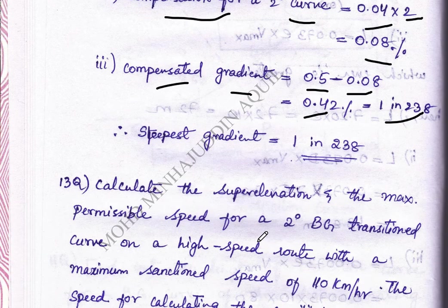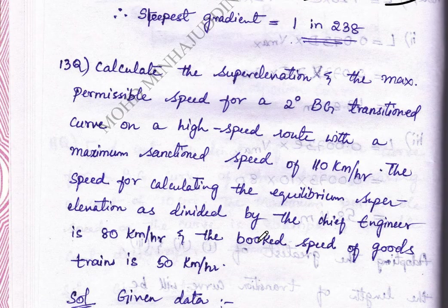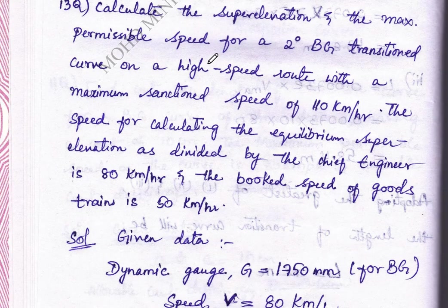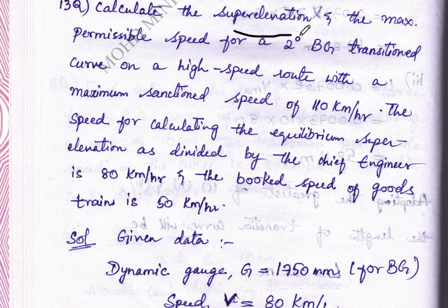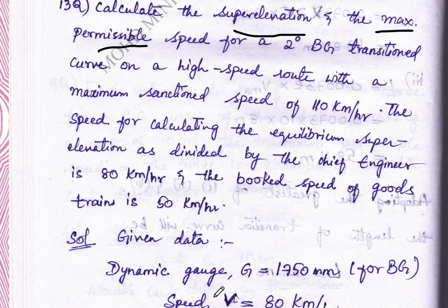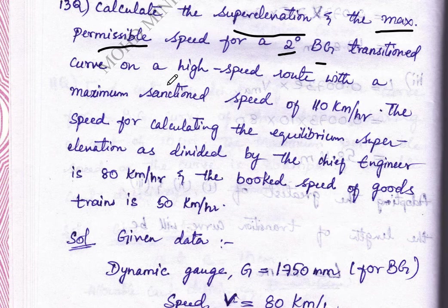Next, we will move to the next problem. What we have to calculate is superelevation and maximum permissible speed for a 2 degree broad gauge transition curve on a high speed route with a maximum sanction speed of 110 km per hour.